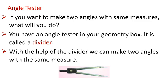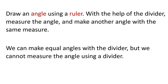It is used to measure and compare lengths. With the help of the divider, we can make two angles with the same measure. You can see a picture of divider here. Let us now see how we can make two angles with the same measure using a divider. Draw an angle using a ruler. Now, with the help of the divider, measure the angle and make another angle with the same measure.